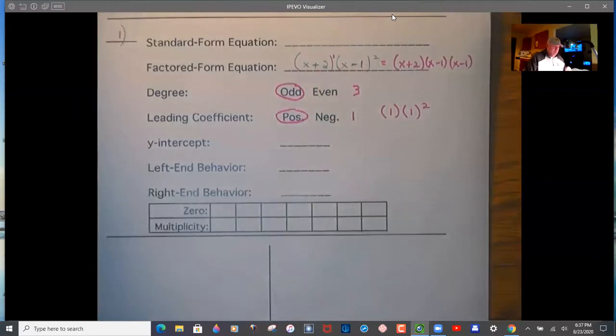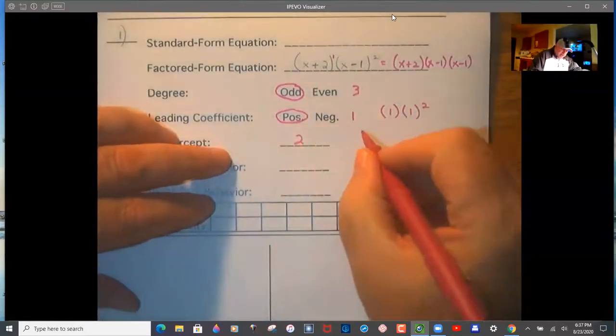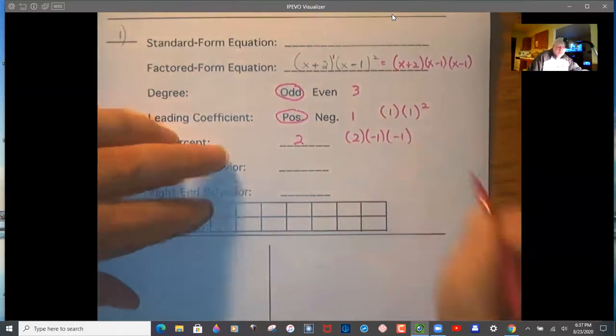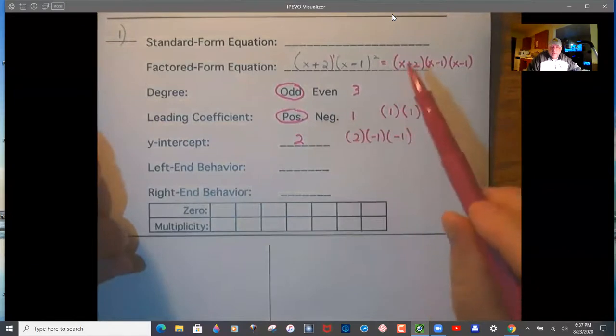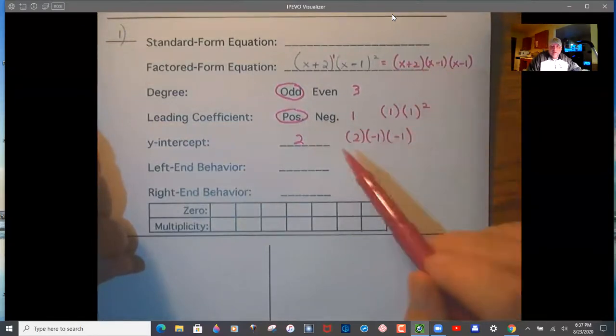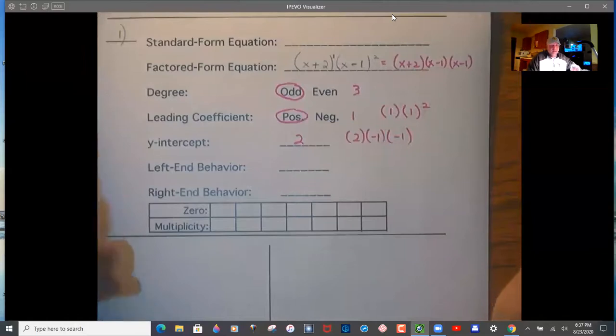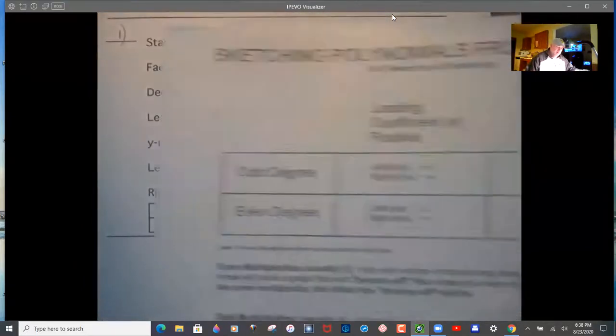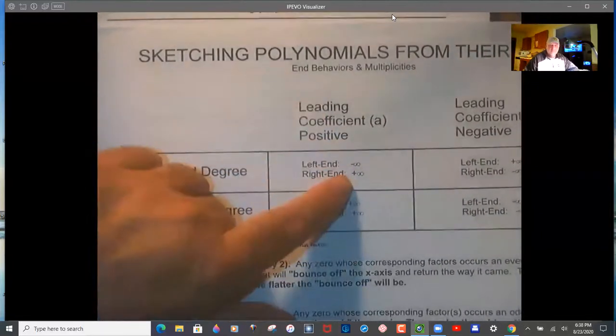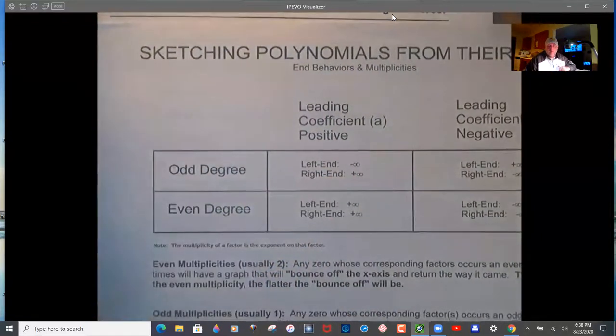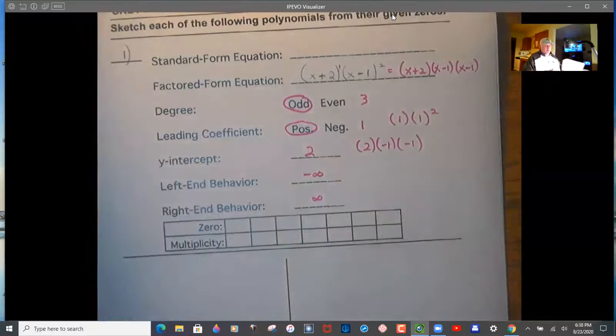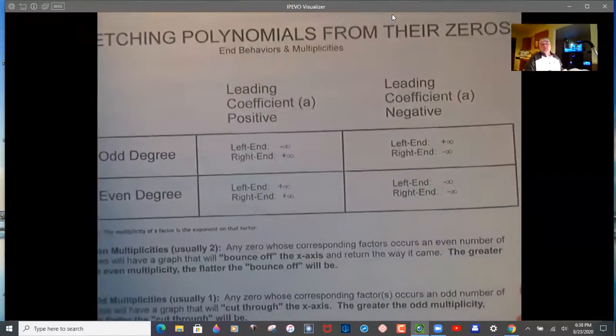Y-intercept is positive 2. How did I get that? 2 times -1 times -1. This is the front product of coefficients, this is the last product. Left end behavior is negative infinity. How? Because we have an odd degree and a positive leading coefficient. There it is, negative infinity, positive infinity. You're figuring out which of those four boxes you're landing in.